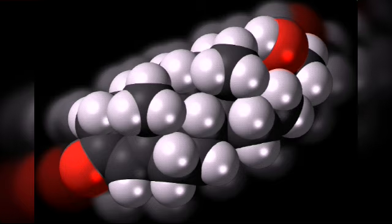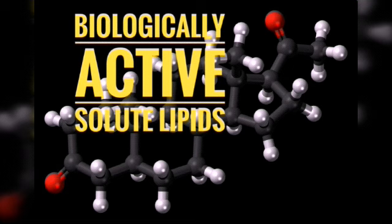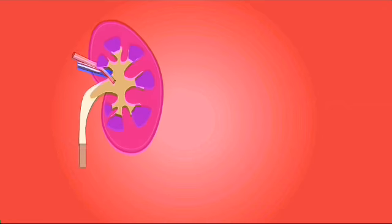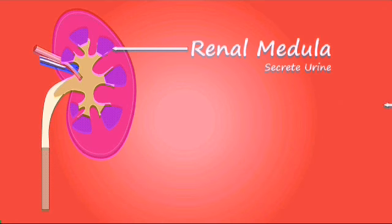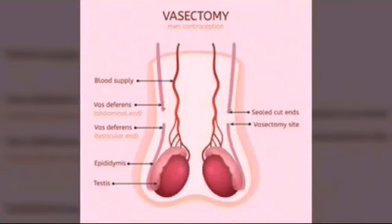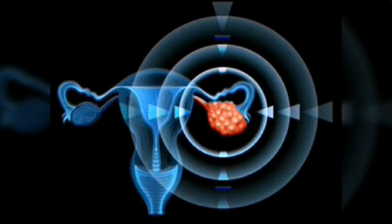Steroid hormones are biologically active soluble lipids having a cylindrical structure. These include hormones secreted by the adrenal cortex and different parts of the body. Mineralocorticoids and glucocorticoids are produced by the adrenal cortex, while sex corticoids are secreted by the gonads such as testes and ovaries.